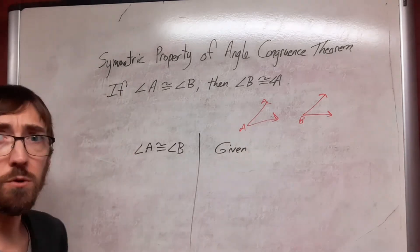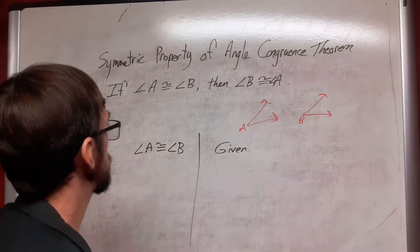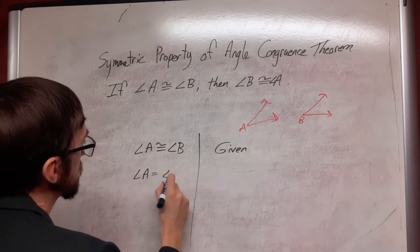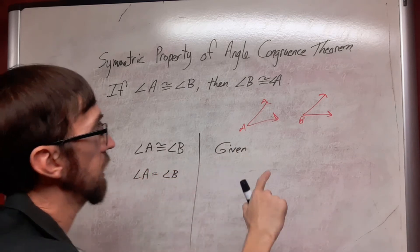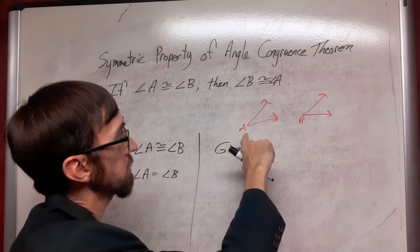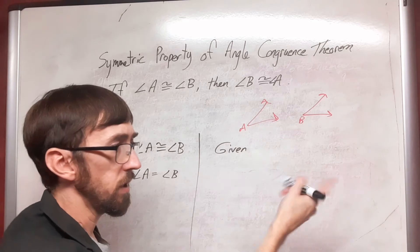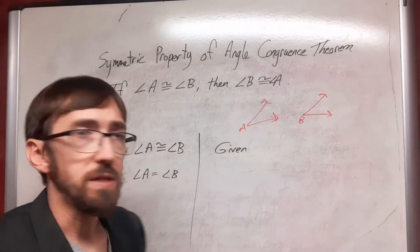The next thing that we're going to do is we're going to switch this to a statement of equality. The definition of congruence says that geometric objects are congruent if they have the same measure and occupy or can occupy different places in geometric space. So that's what we have.